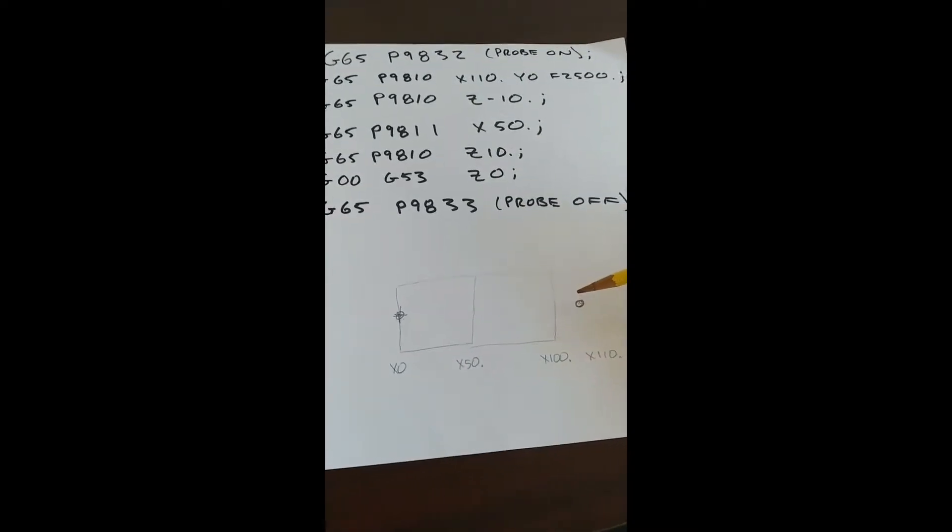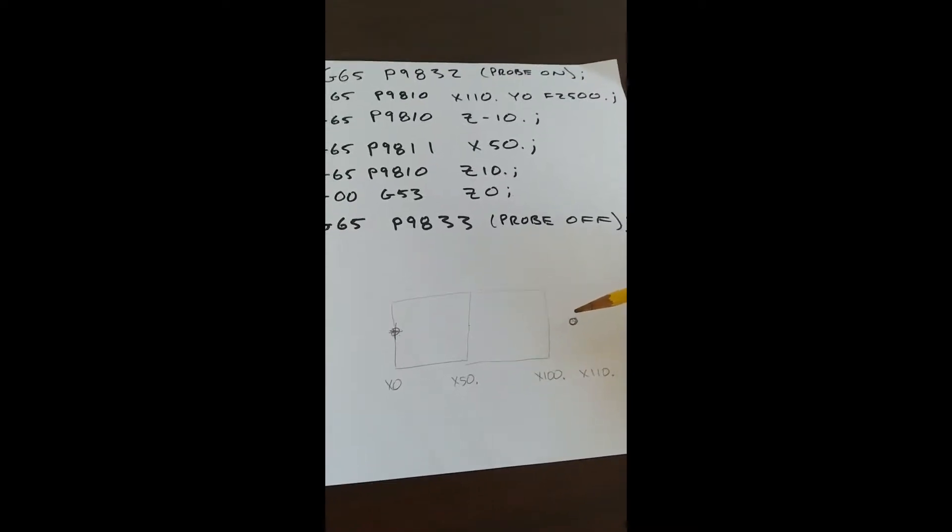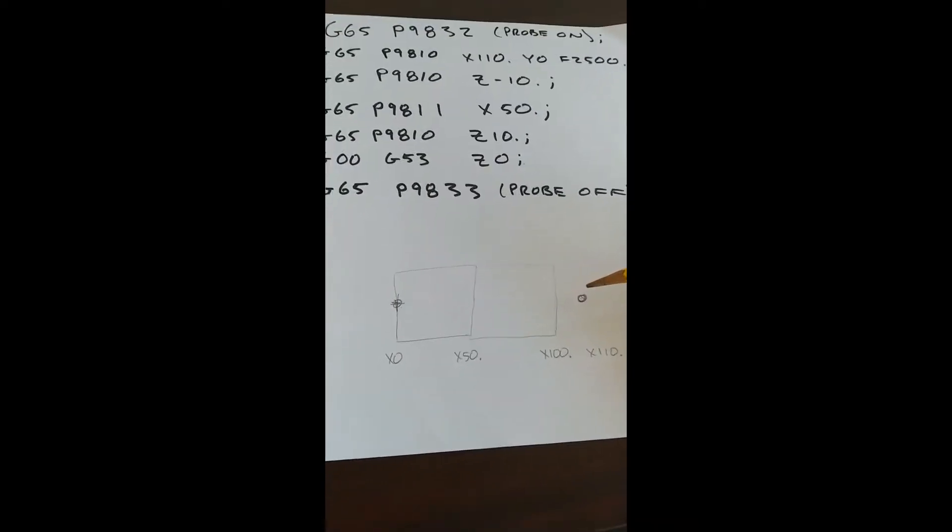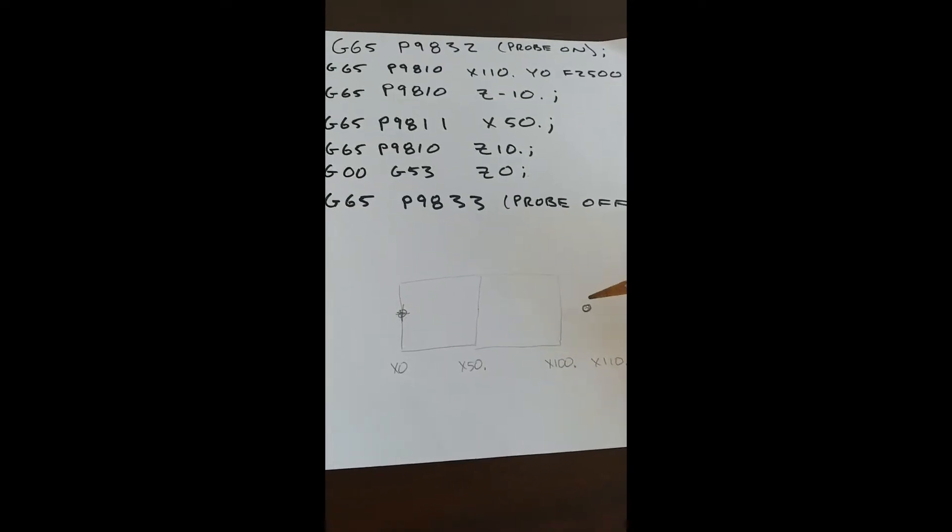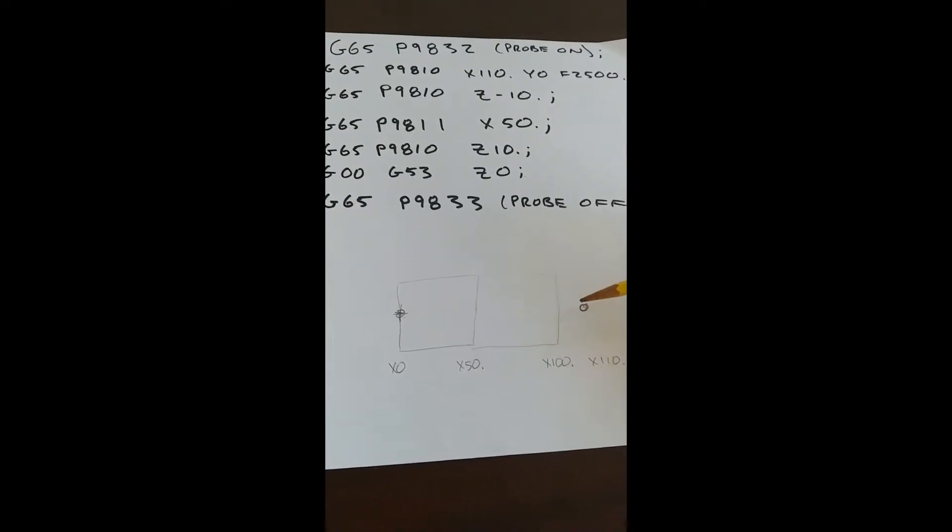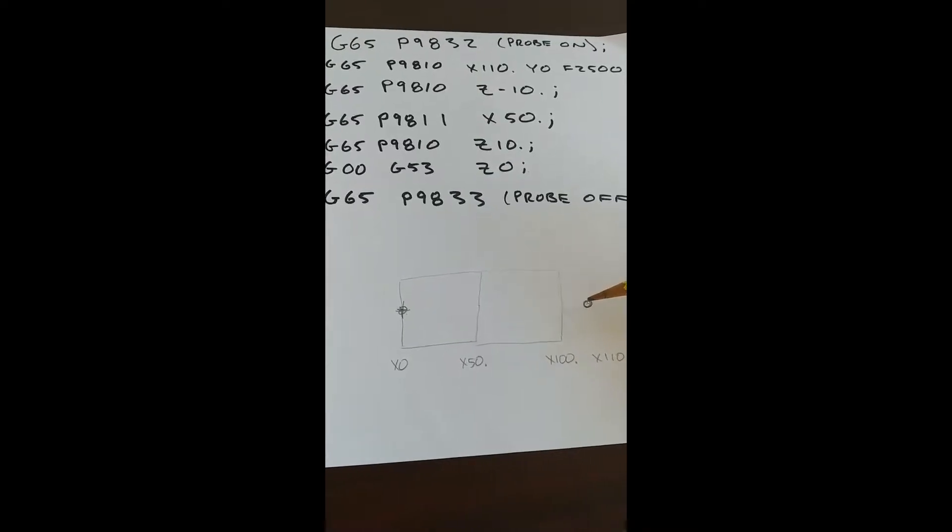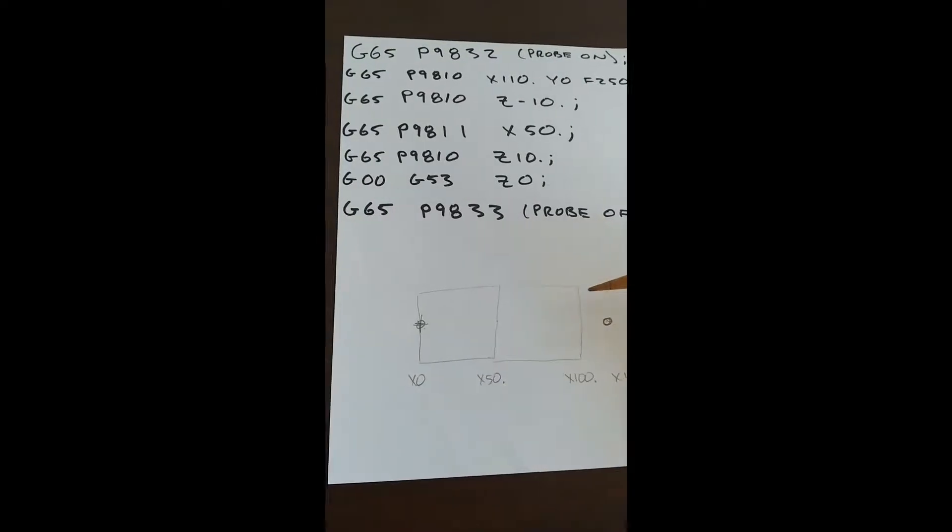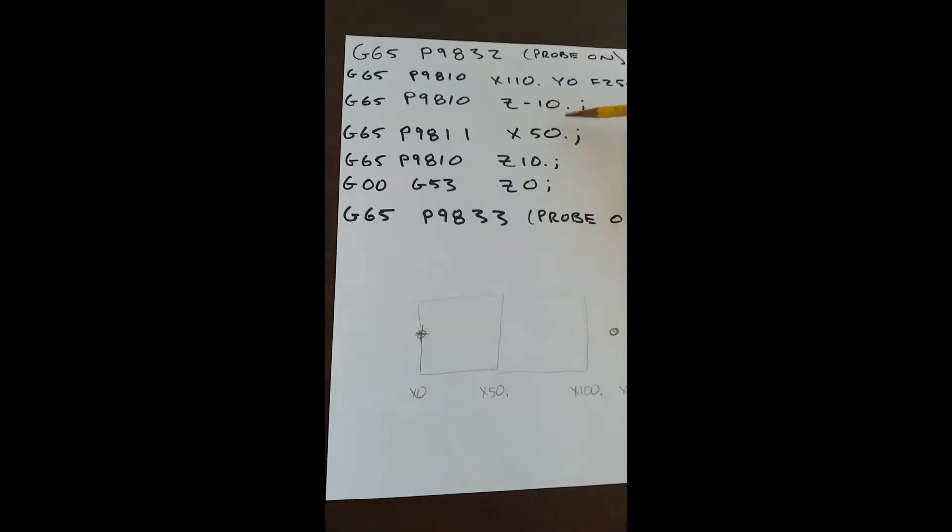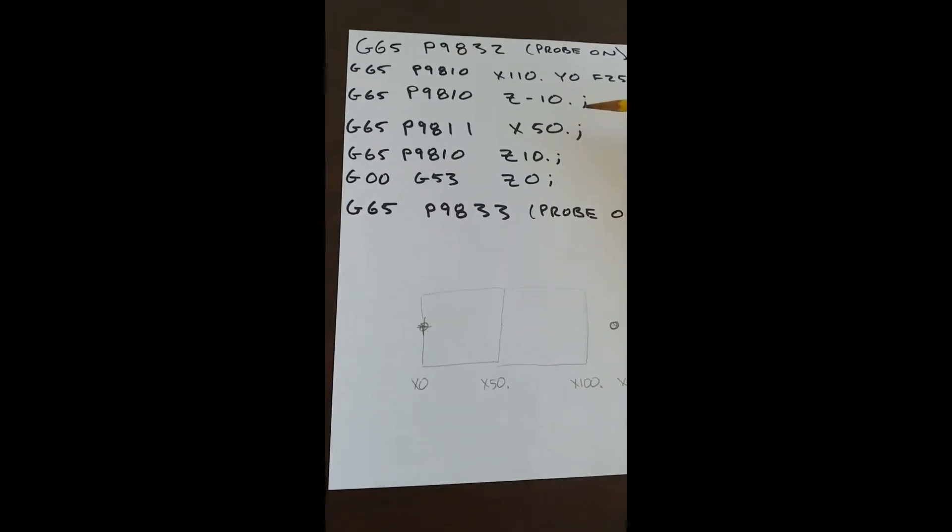Now of course, I need to be able to hit the surface regardless of which piece of stock I use. So if I put the 100 millimeter in, you'll just hit that. No harm done there. And if I put the 50 millimeter in, of course, I need to command it to go to at least X50 to be able to hit that. So that's why I command it to go to X50 here.